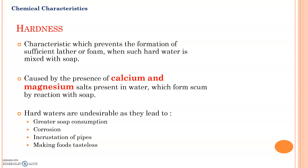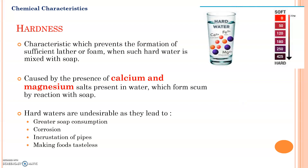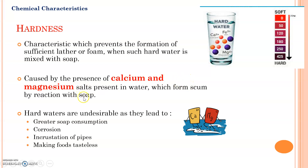In soft water, there is a nice lather formation. The reason behind this is the presence of calcium and magnesium salts in water that prevent lather formation. Scum is formed whenever the water reacts with soap, and this scum formation prevents lather formation.